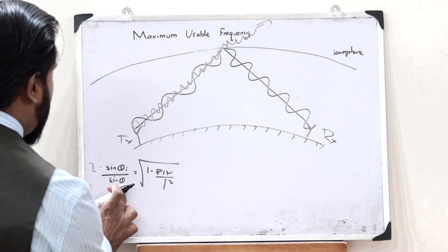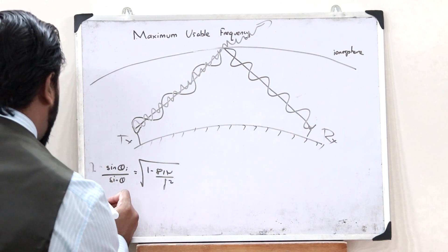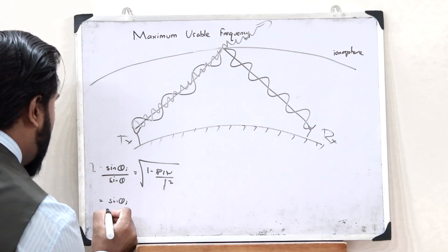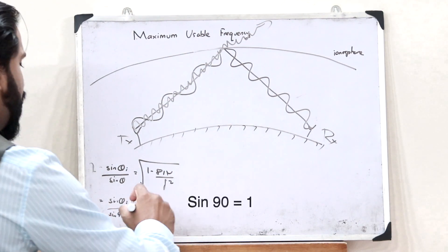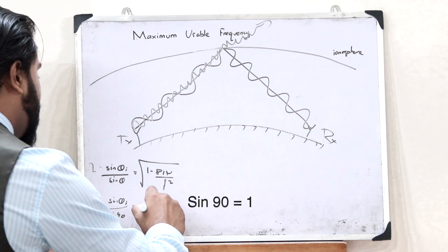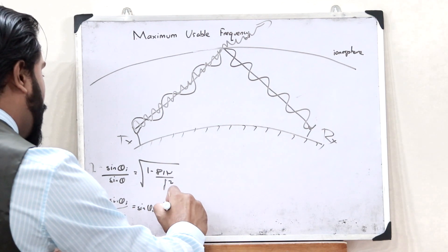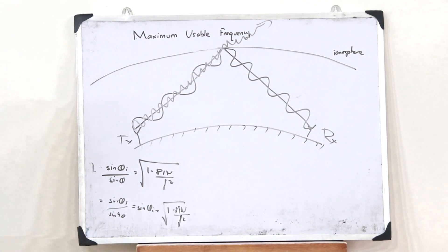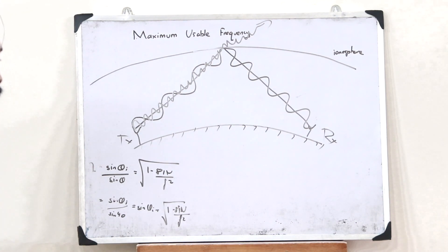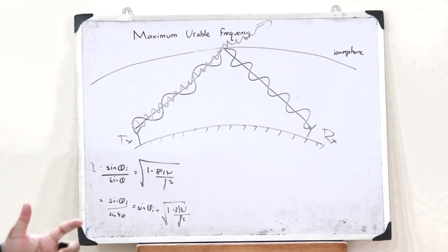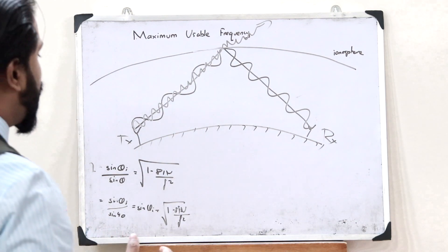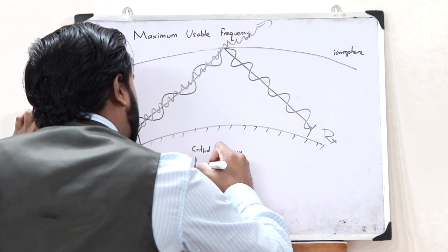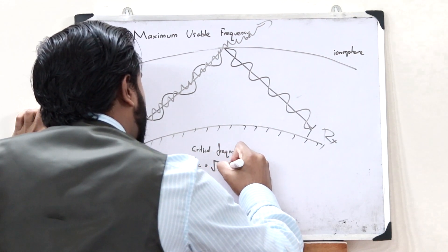Let us assume that θ equals 90 degrees. Therefore eta equals sin(θi) divided by sin(90°), which equals sin(θi), and that equals the square root of 1 minus 81n divided by f squared. We also know the critical frequency fc equals the square root of 81n.